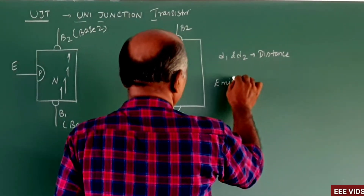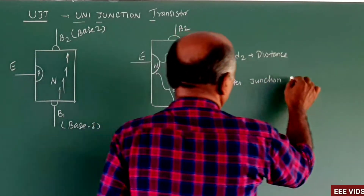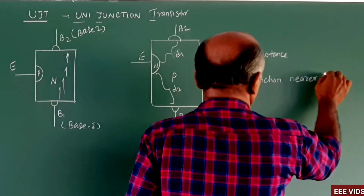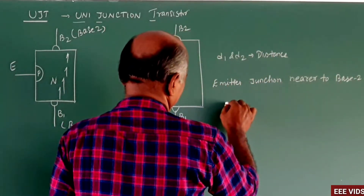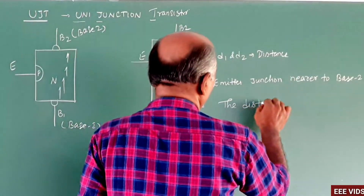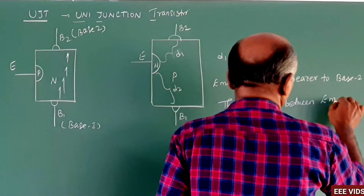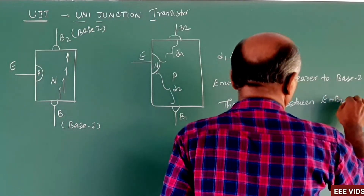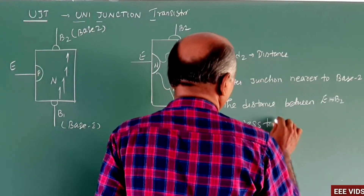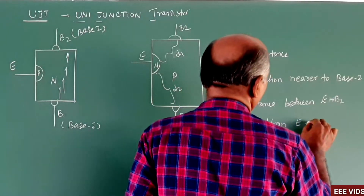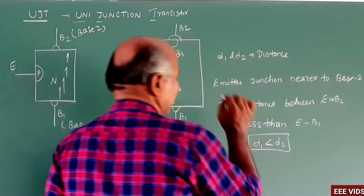The emitter junction is nearer to base-2. Therefore, the distance between emitter and base-2 — E-B2 — is less than the distance between emitter and base-1 — E-B1. So D1 (emitter to base-2) is less than D2 (emitter to base-1). This is the main construction point.